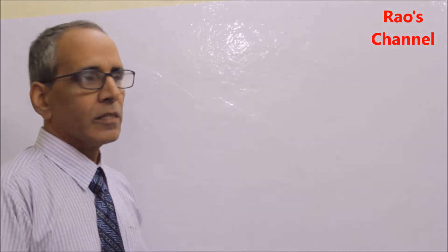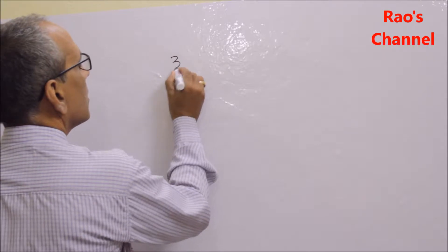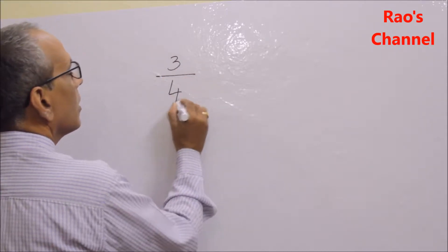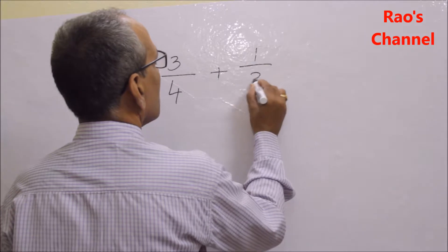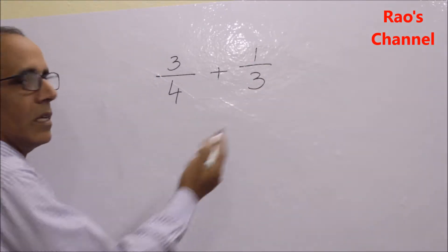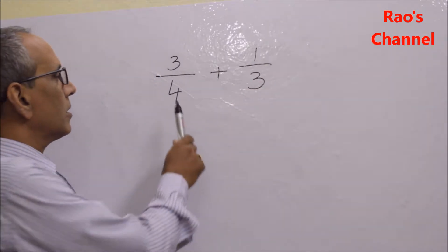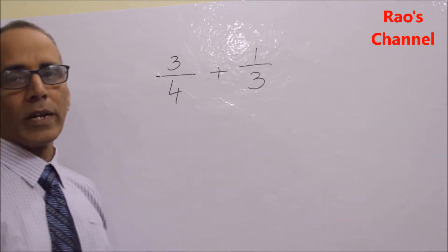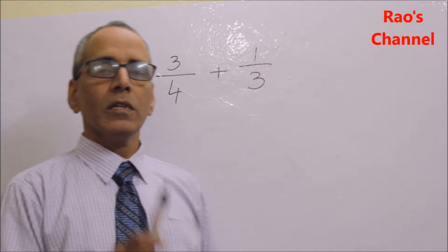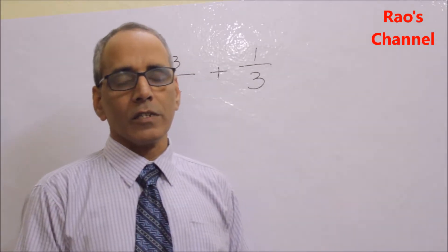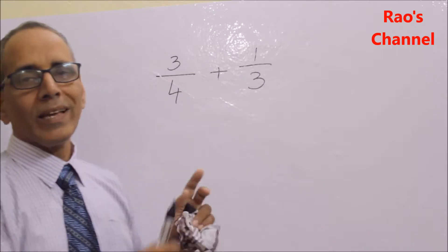Here I take a pair of unlike fractions and do addition. The fractions are 3 by 4 and 1 by 3. These two are unlike fractions because the denominators are different — that is 4 and 3. We cannot sum up two unlike fractions directly, so we take the support of the LCM as a tool to make them equal.